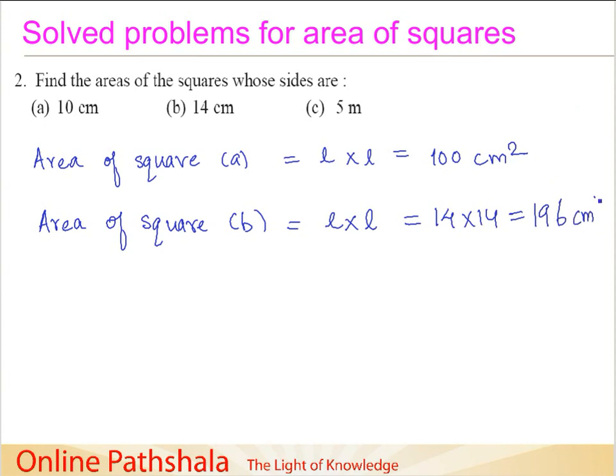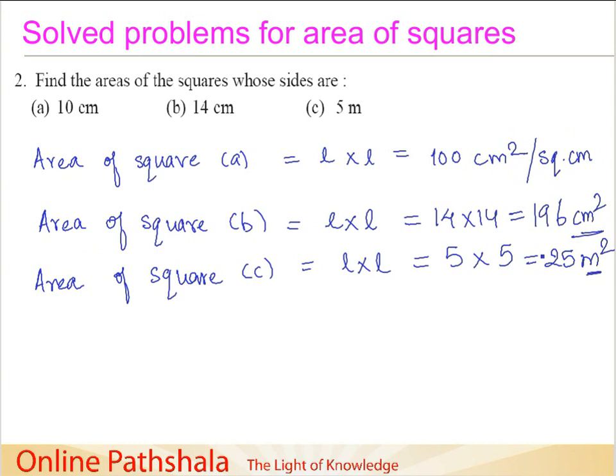This is another notation: centimeter square, or you could also write this as square centimeters. This is one and the same thing—we are just giving what is the unit in which the small squares are counted. Then we go for the area of square C, which is again length multiplied by length, 5 multiplied by 5, which is 25 meters squared because this here is meters.